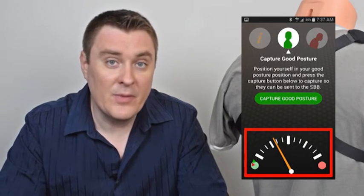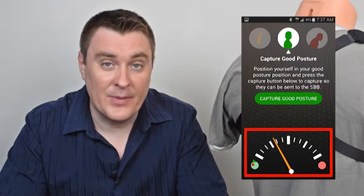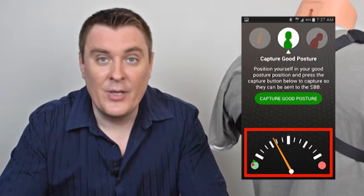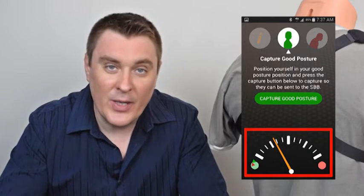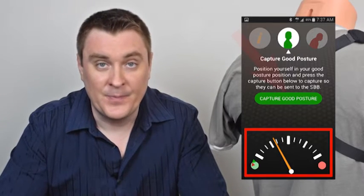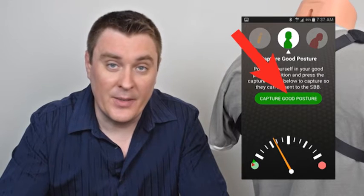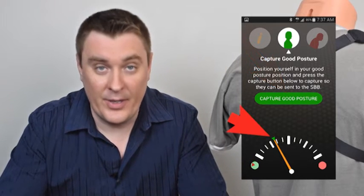At the bottom of the screen you see the dial. This dial displays the current tension on the straps. As I have explained in the beginning of this video, you must tighten the straps in such a way that there is a noticeable tension when you're in your good posture. To capture this good posture tension push the capture button and you will see the green area on the dial.